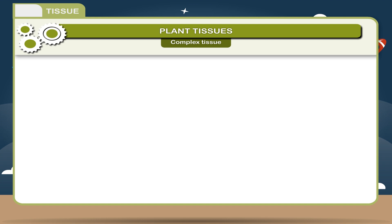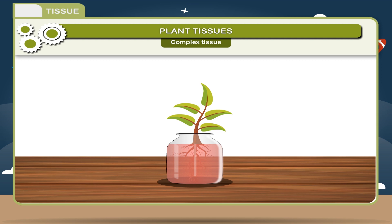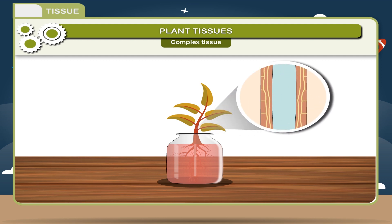Activity: Take a balsam plant and put it in a pot containing red-colored safranin solution for a few hours. Observe the color of the stem and see the different tissues. You will find some tissues taking on a red color. Identify these tissues with the help of your teacher. You will find the xylem cells containing red color, showing that absorption of water takes place through xylem.